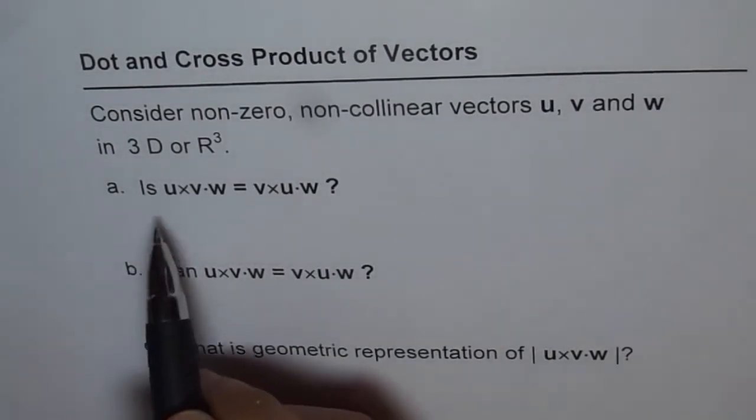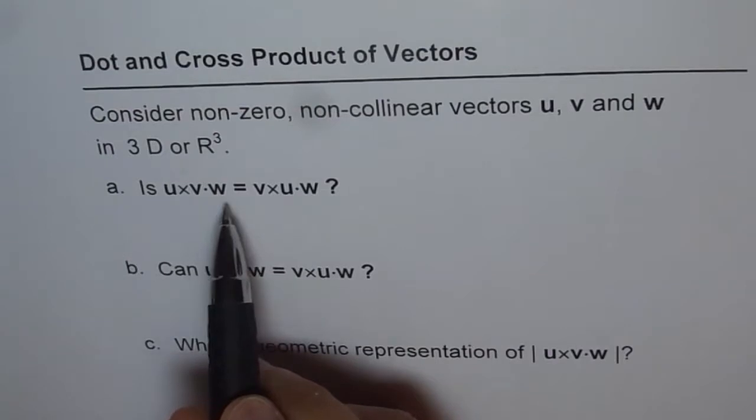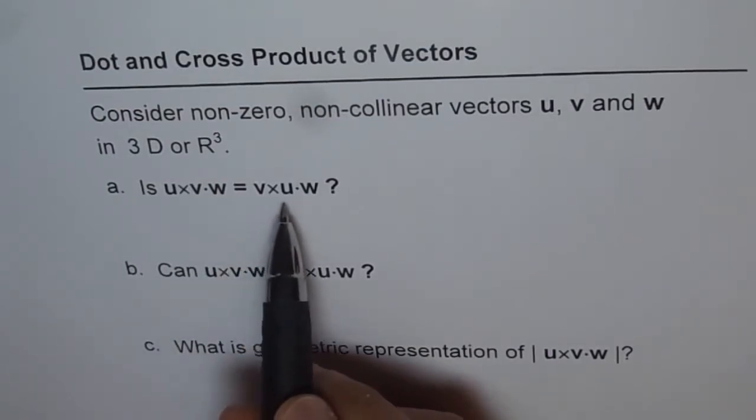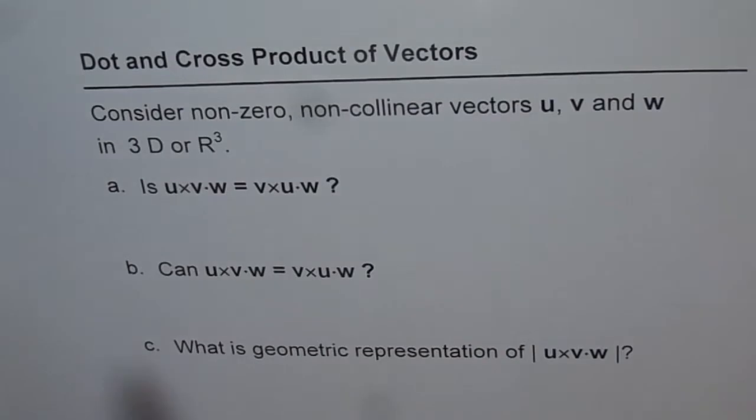Now it says, is u cross v dot w equals to v cross u dot w? Part B is, can u cross v dot w be equal to v cross u dot w? They are non-zero, non-collinear vectors, remember that.